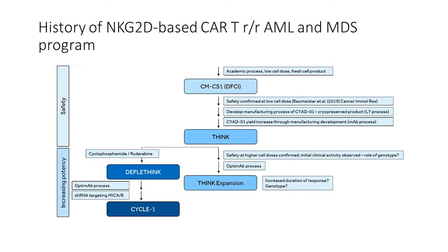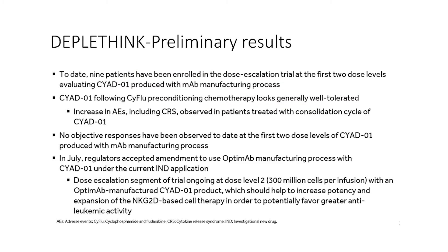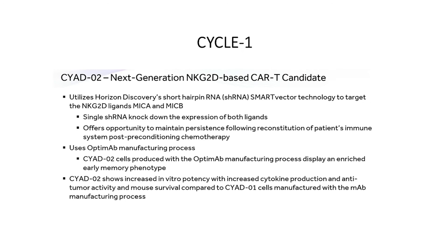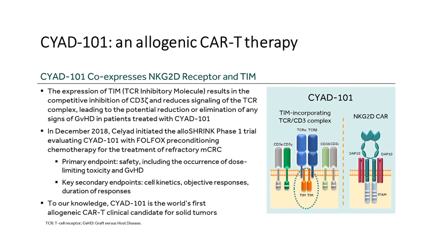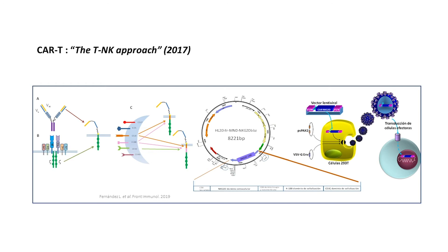Celyad ran a very nice clinical trial in 30 patients. What they found, first of all, was a good safety profile. They also reported some responses not only in hematological diseases but also in solid tumors. They are now moving to an allogeneic CAR T cell setting, using the same target in the allogeneic program known as CYAD-101. With this data in mind, we tried to move forward in our academic setting, where we have a collaborative relationship with researchers from St. Jude and Singapore.